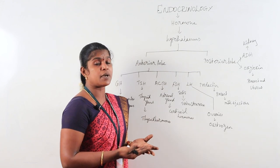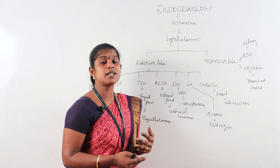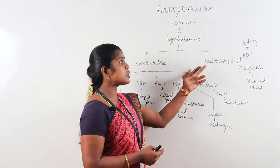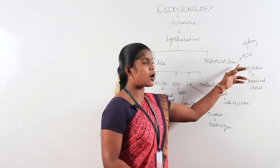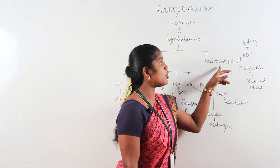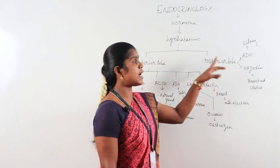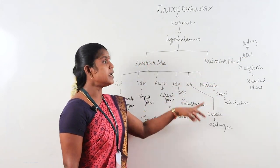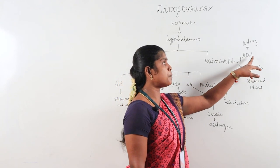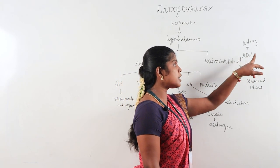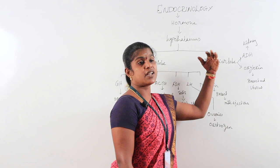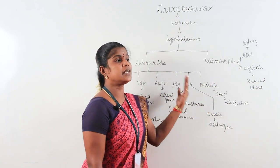When ADH hormone is decreased, the condition is called diabetes insipidus. This is a hypothalamic disorder specific to posterior pituitary. Increased or decreased vasopressin leads to this condition.